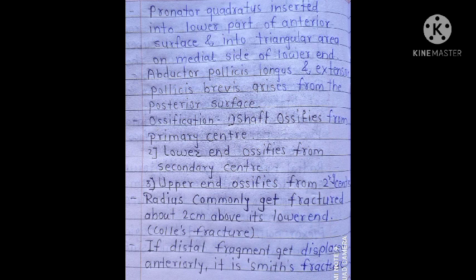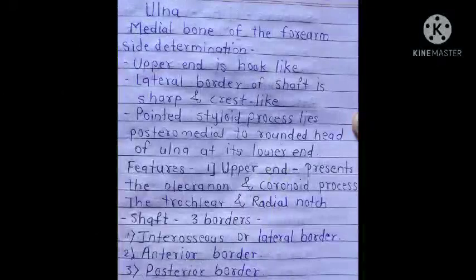The radius commonly gets fractured about 2 cm above its lower end, which is called Colles' fracture. If the distal fragment gets displaced anteriorly, it is called a Smith's fracture. Remember these terms.